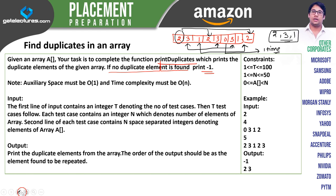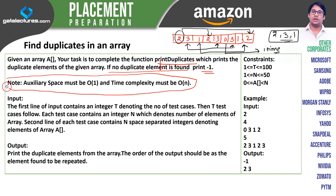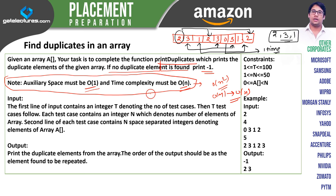Now the most important thing in this question is that the auxiliary space complexity should be O(1) and the time complexity should be O(n). There are multiple solutions that may be present — some solve the problem in O(n²) time, or O(n) time but with O(n) space. I am going to discuss all these solutions and prove that some are not correct because they don't satisfy this criteria.